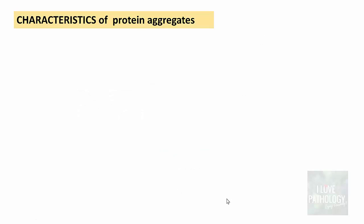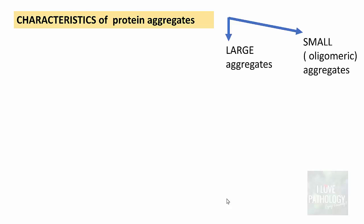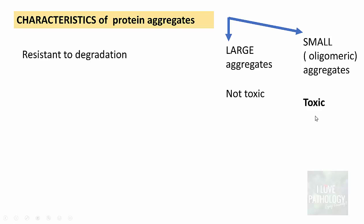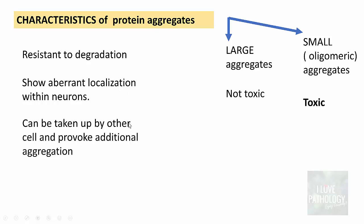Now that we know the common feature of all neurodegenerative diseases is protein aggregates, we need to understand the characteristic features of these aggregates. They can be categorized into two types: large aggregates or small oligomeric aggregates. The larger aggregates are not toxic, whereas the smaller aggregates are the ones which are toxic to the cell. These aggregates are also resistant to degradation and show aberrant localization within neurons, and they can be taken up by other cells, provoking additional aggregation.